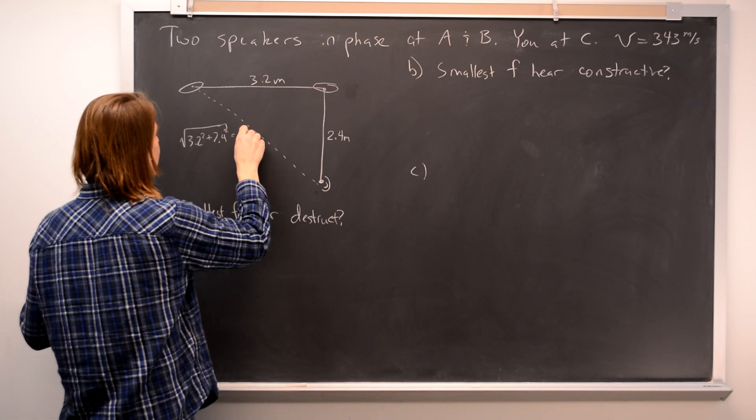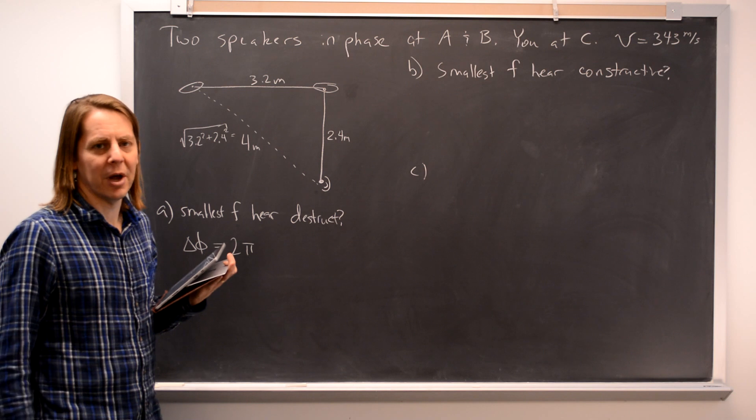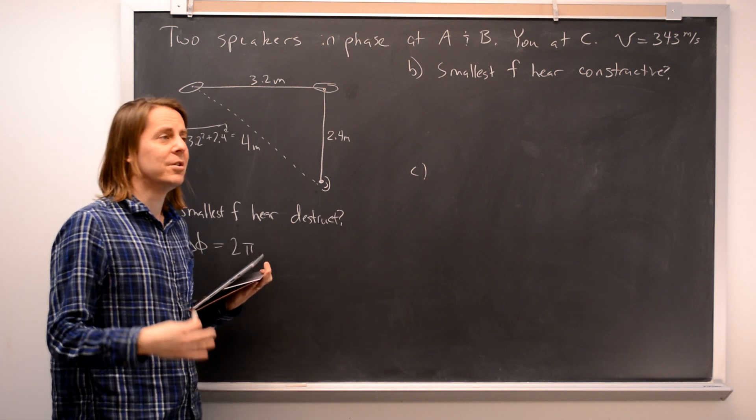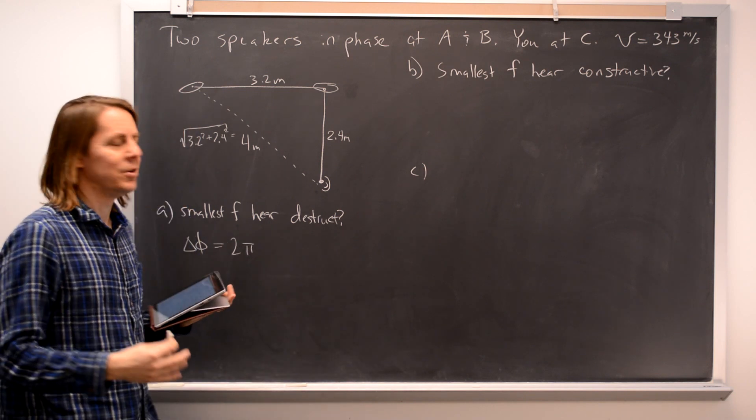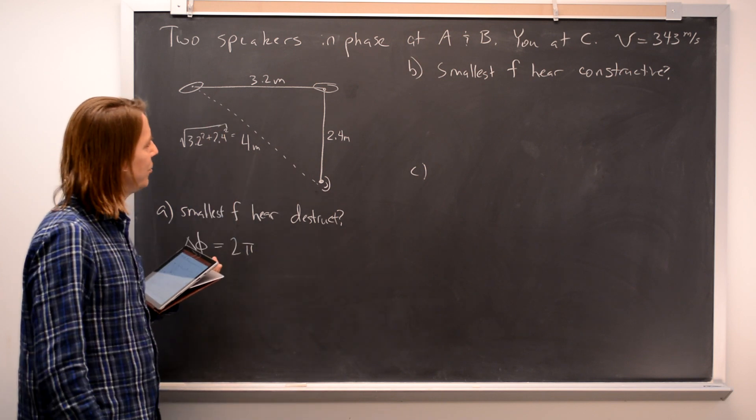The square root of 3.2 squared plus 2.4 squared equals 4. So when you get a number like that, you know you're probably on the right path.